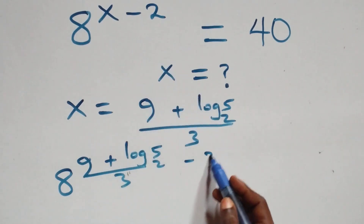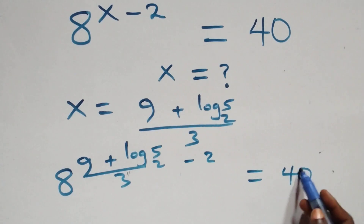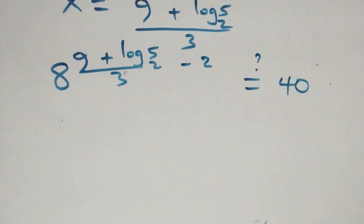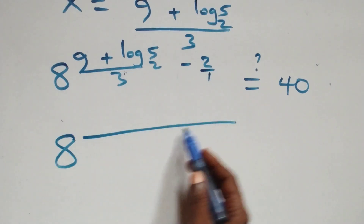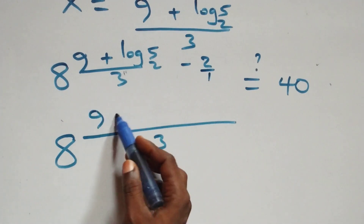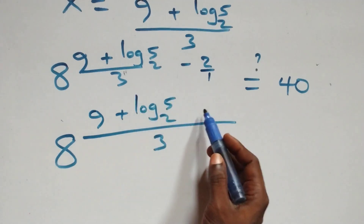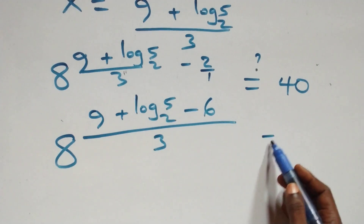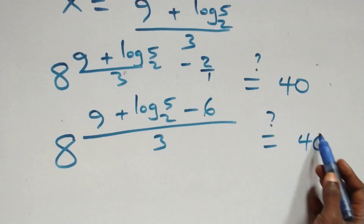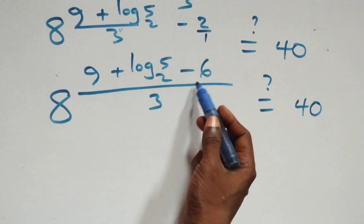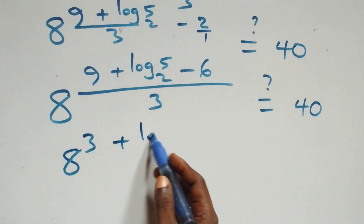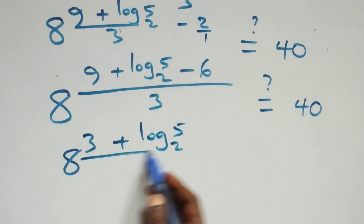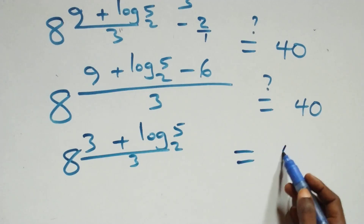Let's check if this satisfies the given problem by substituting x equals 9 plus log 5 base 2, all over 3. What we have becomes 8 raised to power 9 plus log 5 base 2, all over 3, minus 2. We write 2 as 6 over 3, and we have 8 raised to power 9 plus log 5 base 2 minus 6, all over 3. We have 9 minus 6 that's 3, and this becomes 8 raised to the power 3 plus log 5 base 2, all over 3, equal to 40.